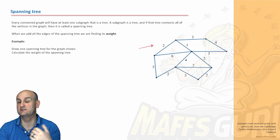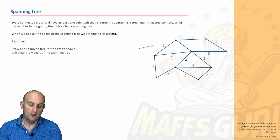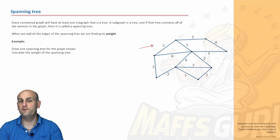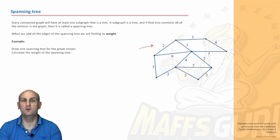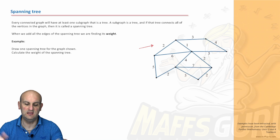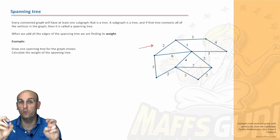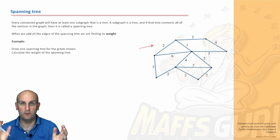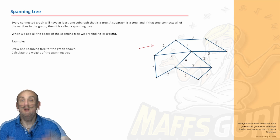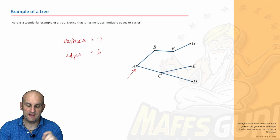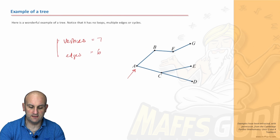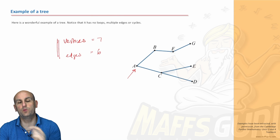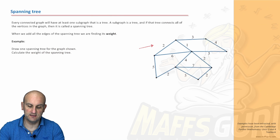If a sub-graph is a tree and it connects all the vertices in the graph, then it's called a spanning tree. When we add all the edges of the spanning tree, we find its weight — similar to Dijkstra's algorithm where we find the shortest distance between two points. A spanning tree must have one less edge than the number of vertices.